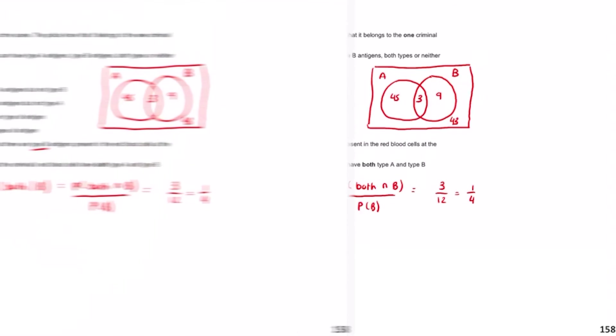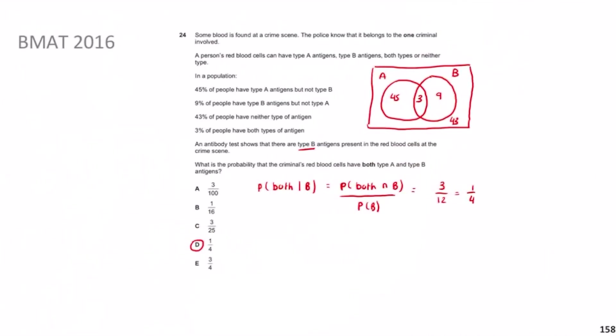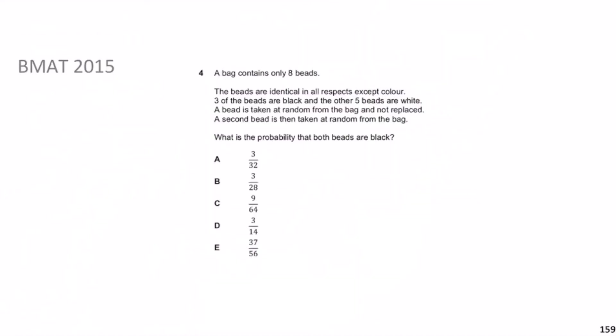I really hope the idea of Venn diagrams has made sense and you understood how they work. We also revisited the conditional probability formula, which is really important. Now we move on to the next question, BMAT 2015 Question 4.